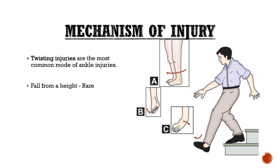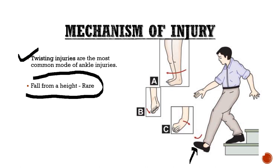Regarding mechanism of injury, in 99% of patients it is most commonly a twisting injury. The patient gives a history of twisting of the ankle, most commonly while coming down stairs. A fall from height can also cause a fracture but is extremely rare.